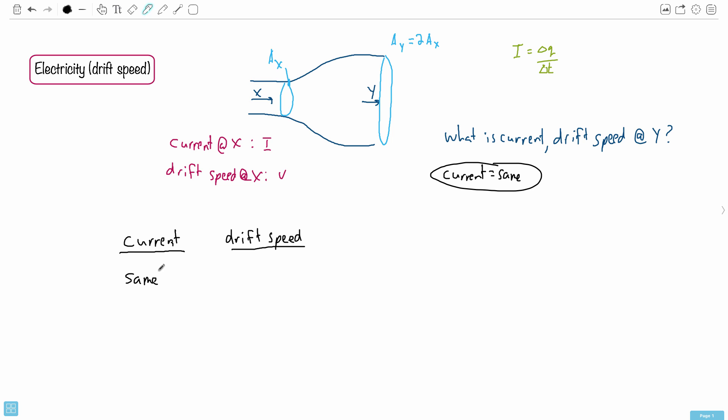That means you can cross off some of the choices, right? Instead of saying same, I'll actually write it down. Same meant i. Now let's do the other one, drift speed. Even if you're not sure how to use this stuff, you can always go and find an equation for drift speed.